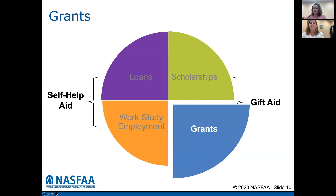Next is grants. Grants come in the form of a Pell Grant. There's also the Supplemental Educational Opportunity Grant that colleges are funded to provide to students to help pay for college. Grant aid is money that does not have to be paid back — those are funds to help you with your college education.